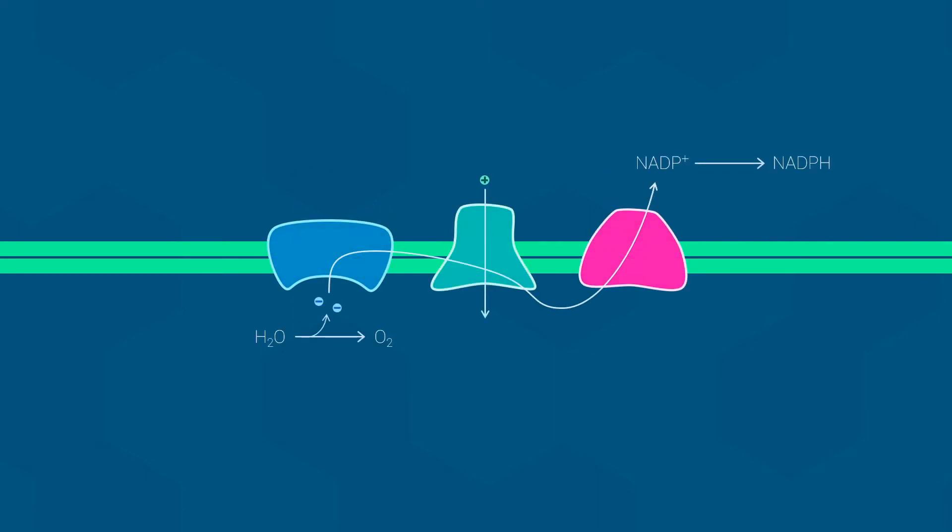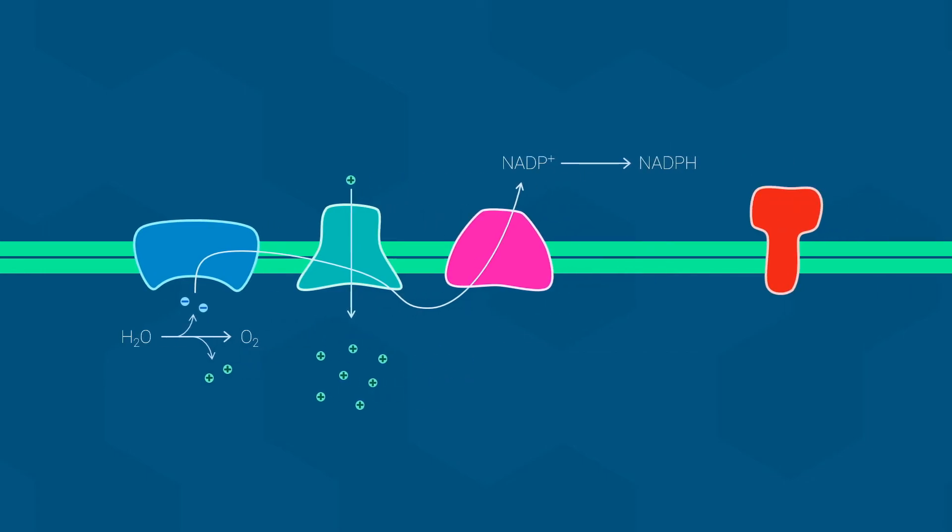Protons are also released by the oxidation of water in the very first step. This means that protons are accumulating on one side of the thylakoid membrane and creating, you guessed it, an electrochemical gradient. Just like in oxidative phosphorylation, this gradient is used to produce ATP thanks once again to ATP synthase.